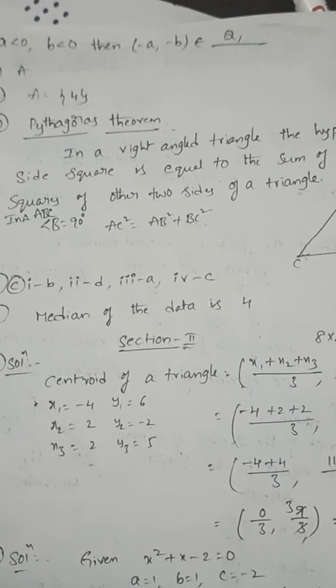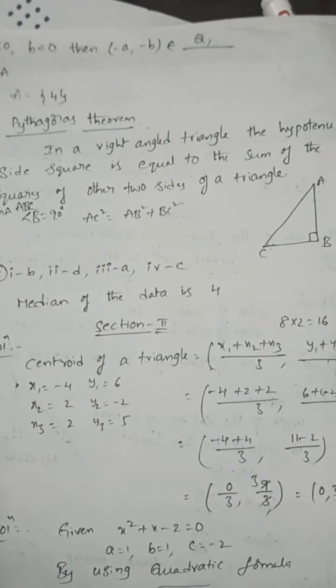The roster form of x where x is a composite number less than 6. What is that for?